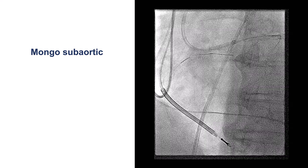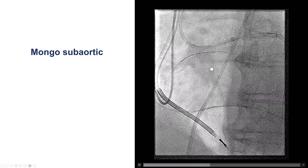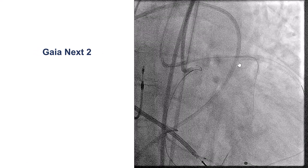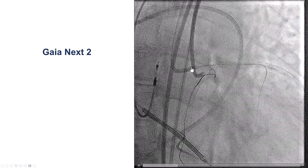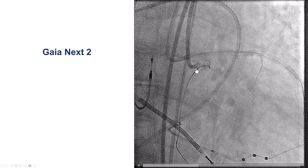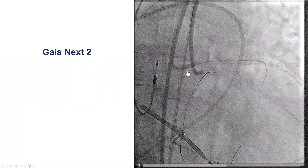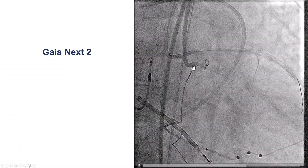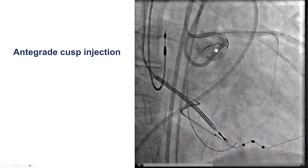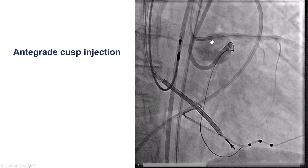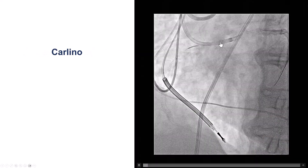We did multiple attempts to cross with the retrograde wire. We did use a Mongo that seemed to be going into the sub-aortic space. We did use some stiffer wires. For crossing the RCA at the ostium, it is important to use the RAO view and confirm that the wire is going posteriorly, which is where the ostium of the right coronary artery usually is. We did some cusp injections to see if we were going in the right direction, but the wire seemed to be stuck in that area.